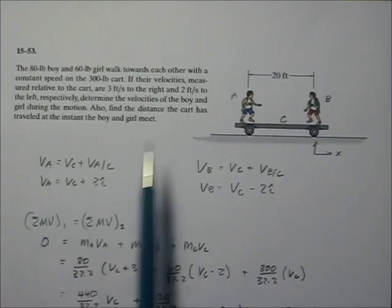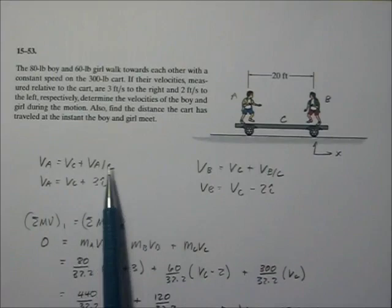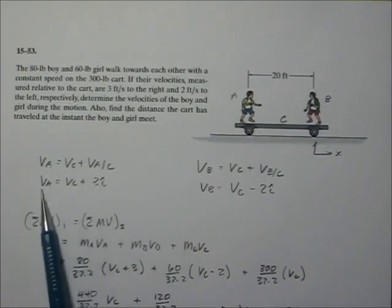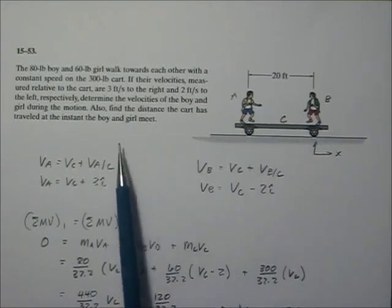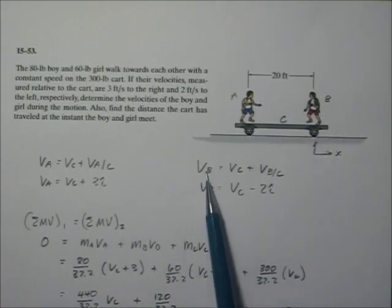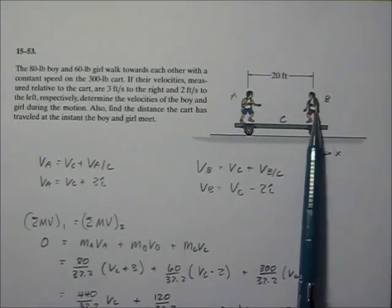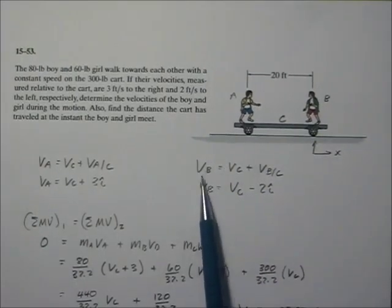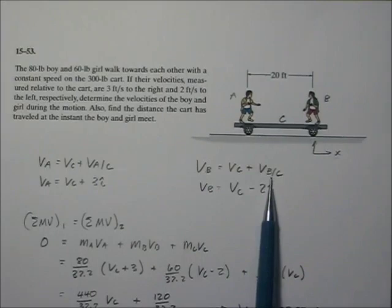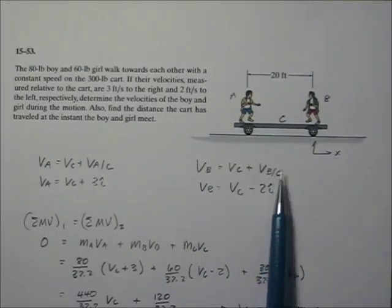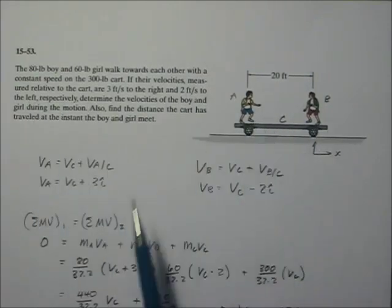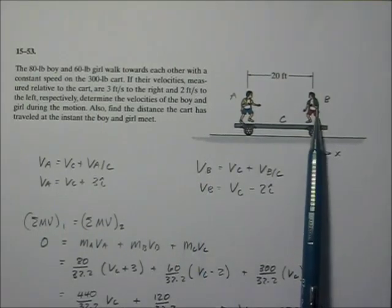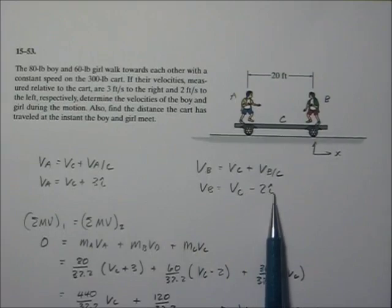Let's write the relative equations for each one. The velocity of A equals the velocity of the cart plus the velocity of A with respect to the cart. Since A-with-respect-to-cart was given, vA equals vC plus 3, going in the positive i direction. For the girl — particle B — vB equals vC plus v of B with respect to C. Since she's going 2 feet to the left, vB equals vC minus 2, because it's in the negative direction.